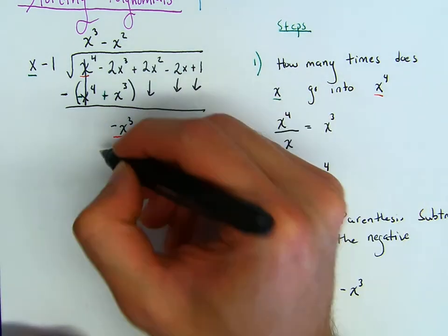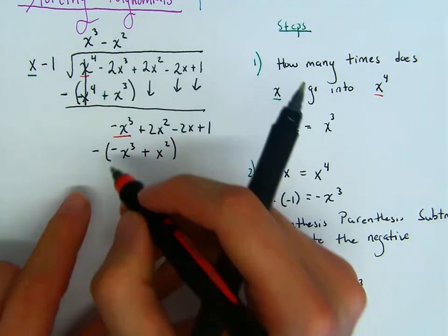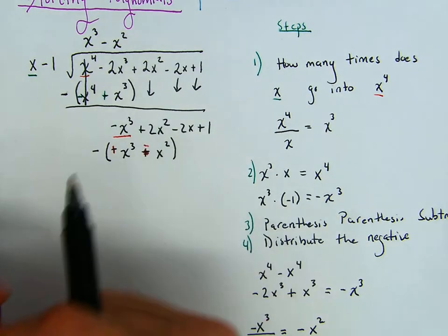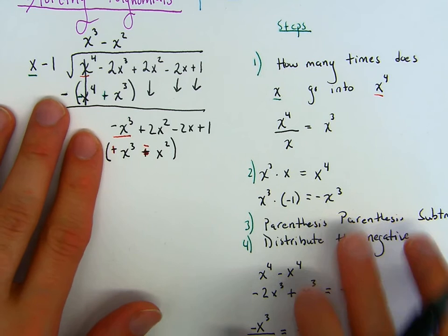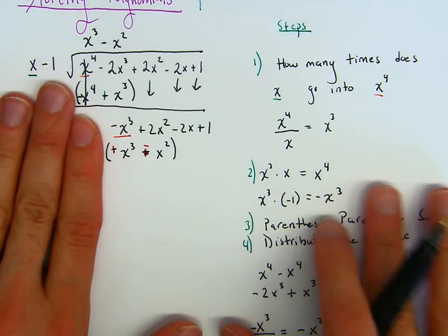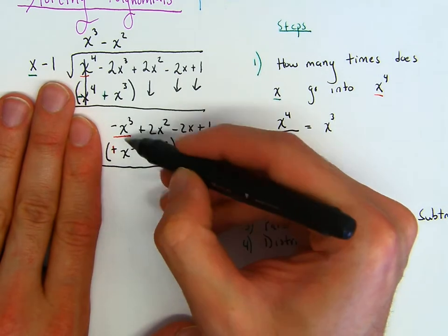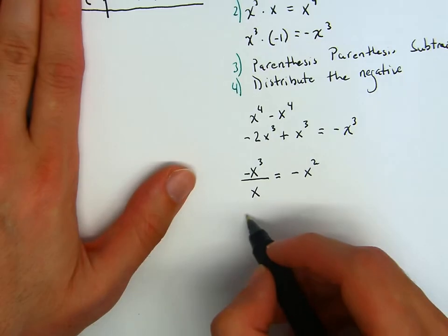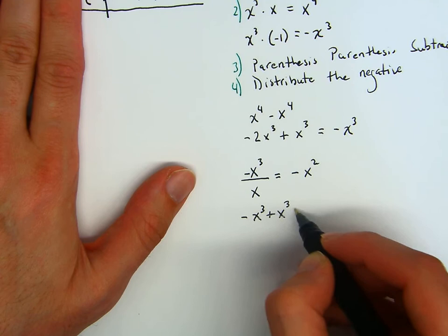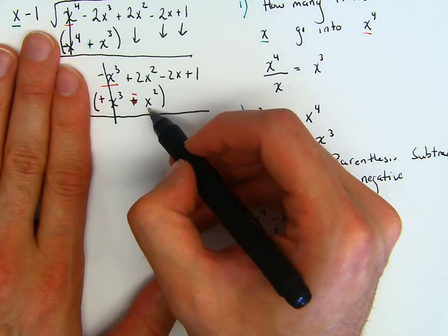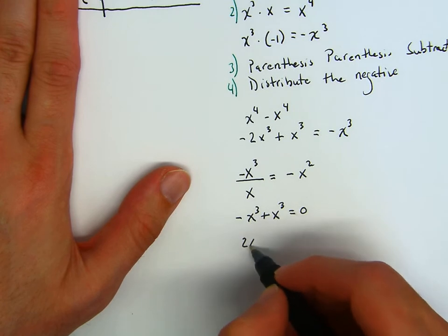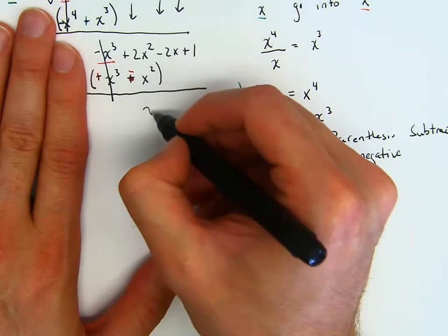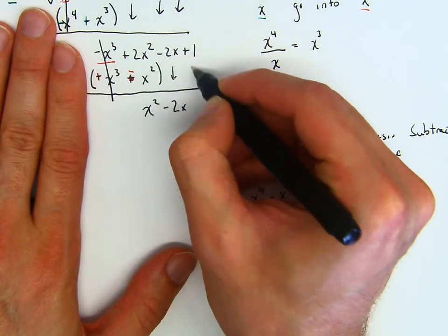Then we have negative x squared times x is negative x cubed. Negative x squared times negative 1 is positive x squared. Then repeat: parentheses, parentheses, subtract. We distribute the negative — the negative times this negative becomes positive, this negative times this positive becomes negative. I like to put my finger over here to tell myself I'm combining these terms. I have negative x cubed plus x cubed — that's zero. Then we have 2x squared minus x squared, which is x squared. We bring down the negative 2x and the positive 1.